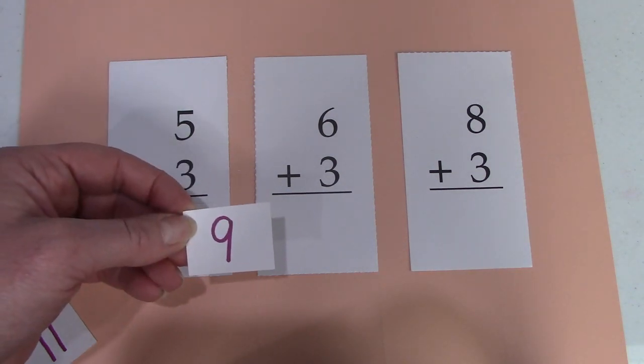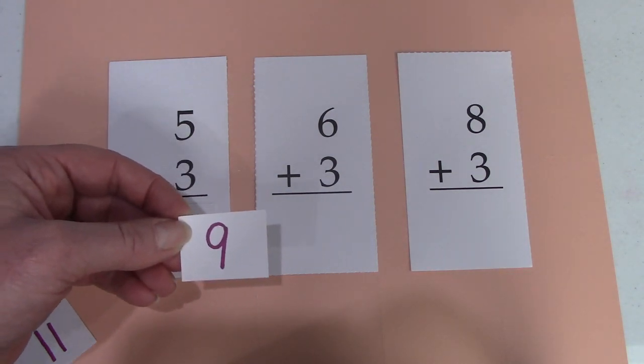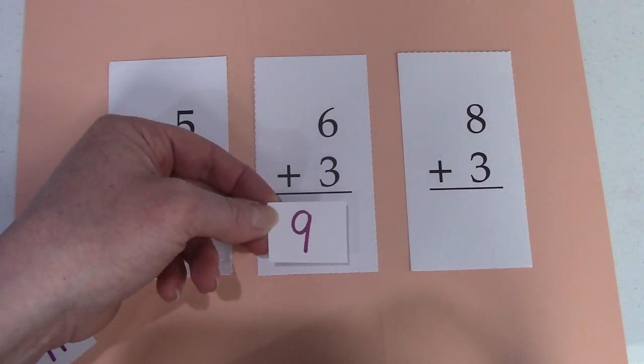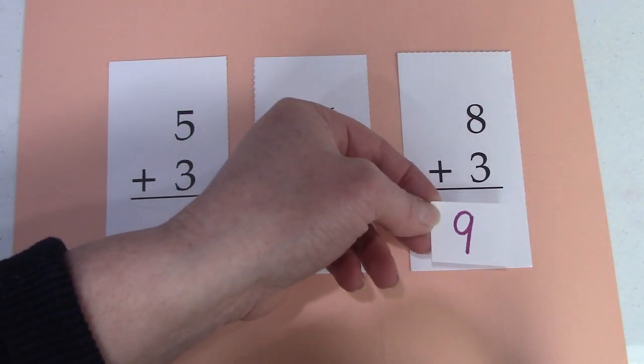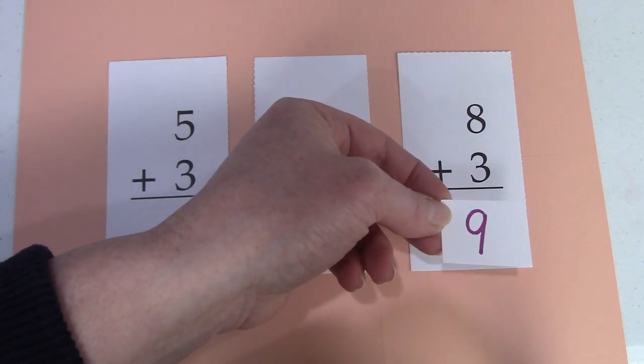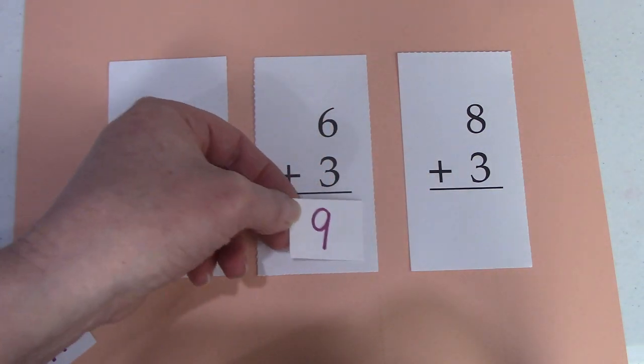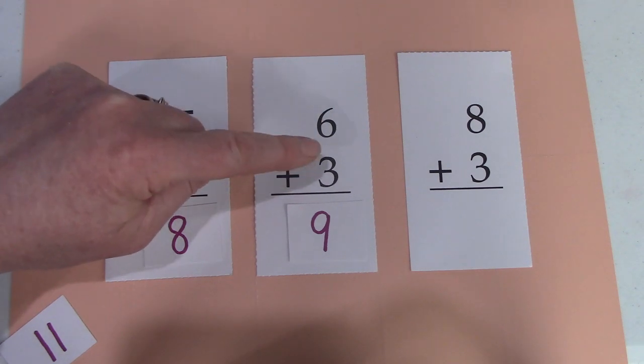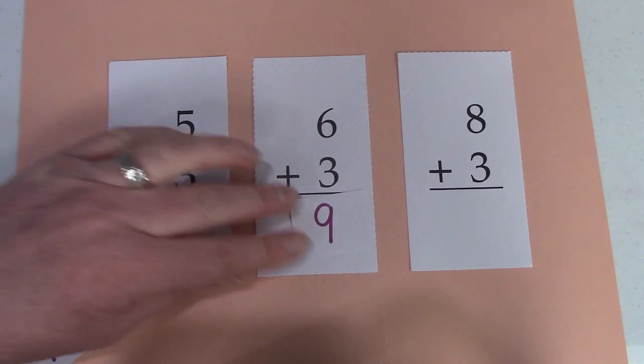Here's another one. The answer is 9. Is that going to go with 6 plus 3 or 8 plus 3? Well, we know that 8 plus 1 is 9. So it's not going to go there. 6 plus 3 is 9. 6, 7, 8, 9. There's our answer.